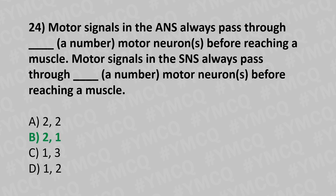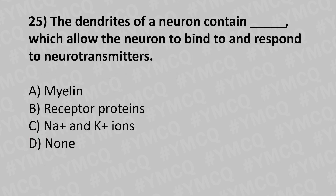Moving to our twenty-fifth question. The dendrites of the neuron contain dash, which allows the neurons to bind to and respond to neurotransmitters. Option A: myelin. Option B: receptor proteins. Option C: sodium and potassium ions. Option D: none. And the answer is option B: receptor proteins.